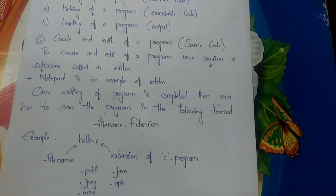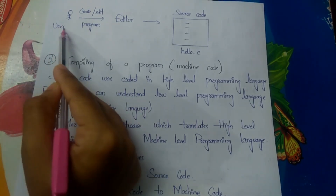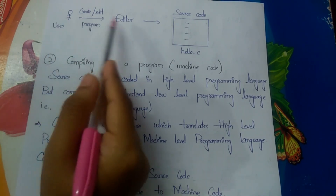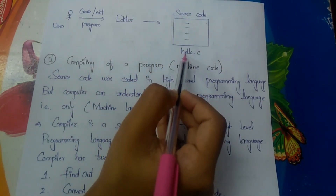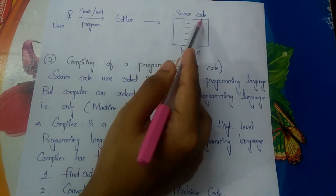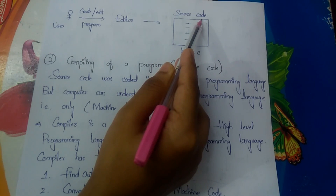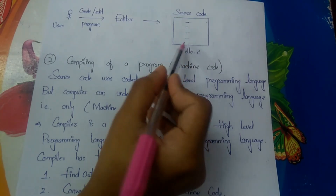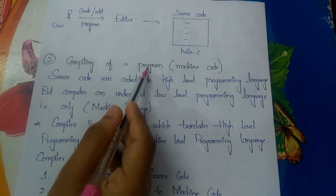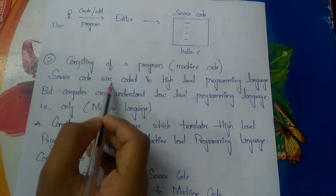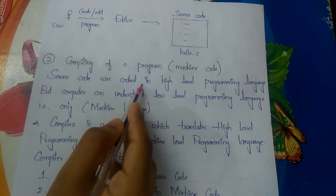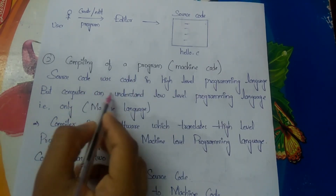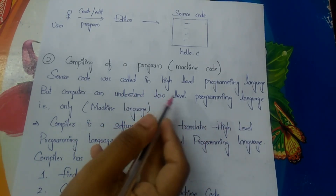So the user will create and edit a program using an editor such as Notepad, saving it as hello.c. This file is completely source code — the program written in a high-level programming language. The source code is written by the user in a high-level programming language, but the computer can only understand low-level programming language.